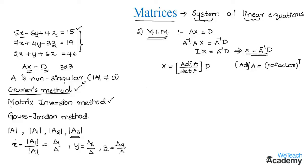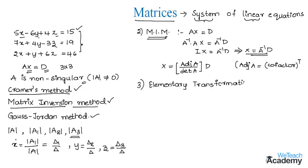Coming to the next method — Gauss-Jordan method. Remember that in this method we mainly use the concept of elementary transformations, such as transforming a row using subtraction, interchanging two rows, or converting a row by adding the remaining rows.